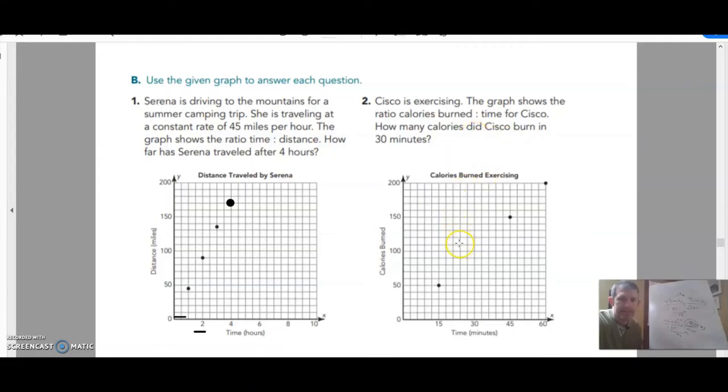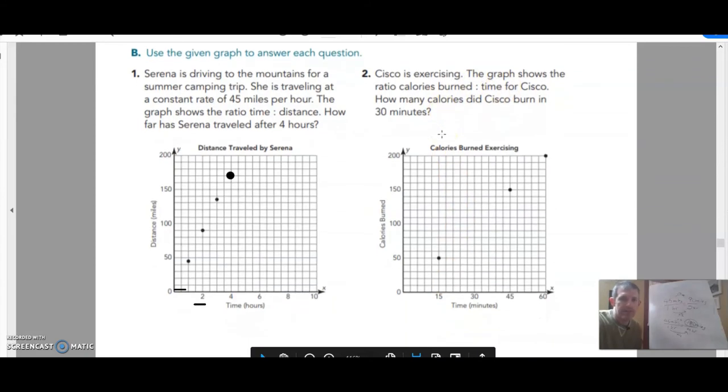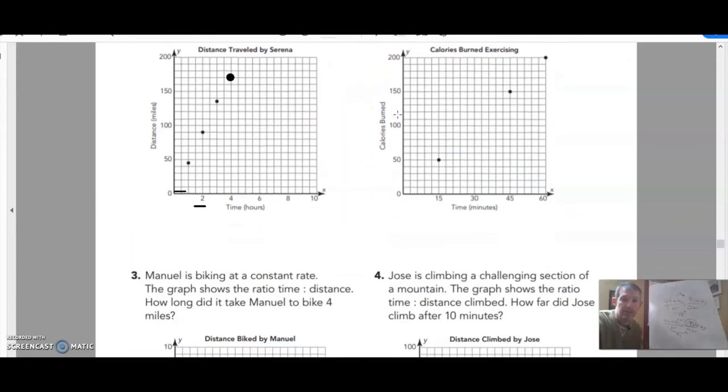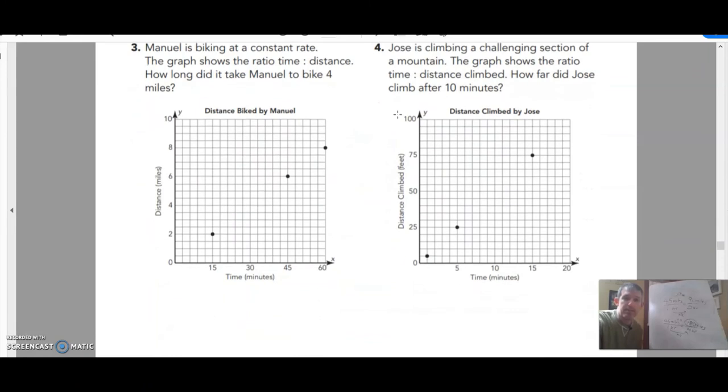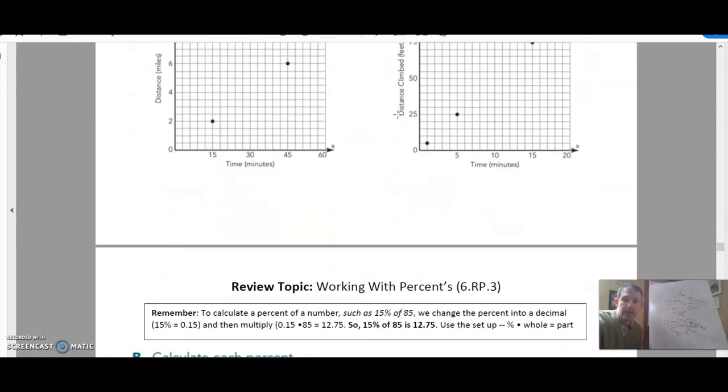This one's going to be very similar. Basically do the same thing. Find the ratio, the original ratio. It looks like he burned 15 minutes, he burns 50 calories. So you got to figure out how many calories he would burn in 30 minutes. Sounds like another scaling up or scaling down type of problem. And I'm guessing these are going to be very similar to that.